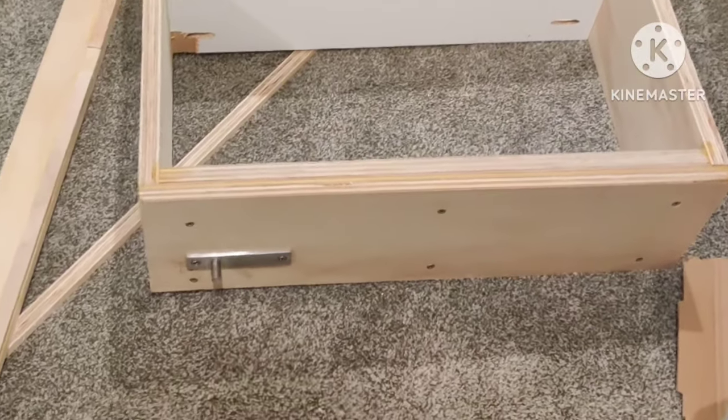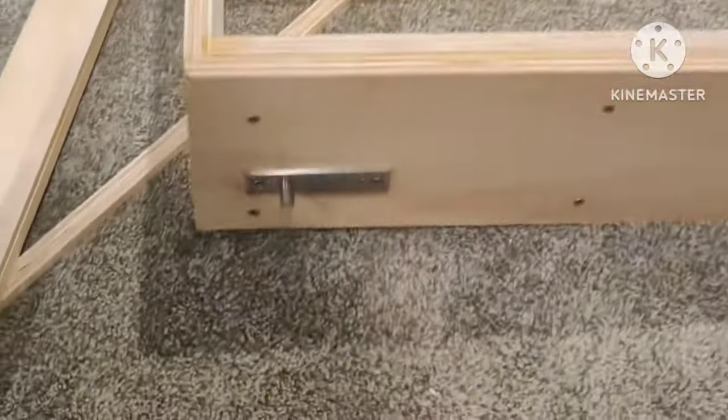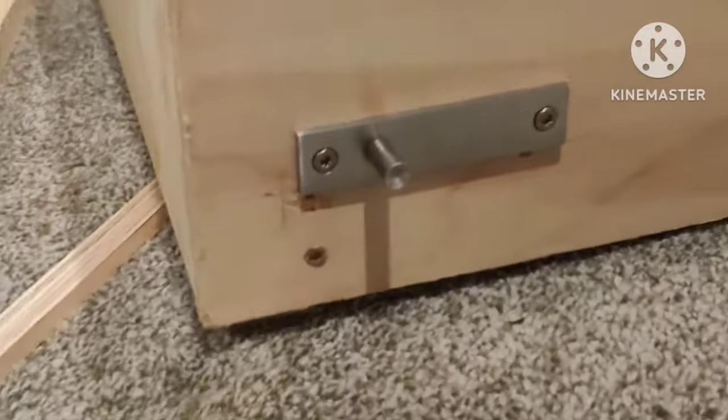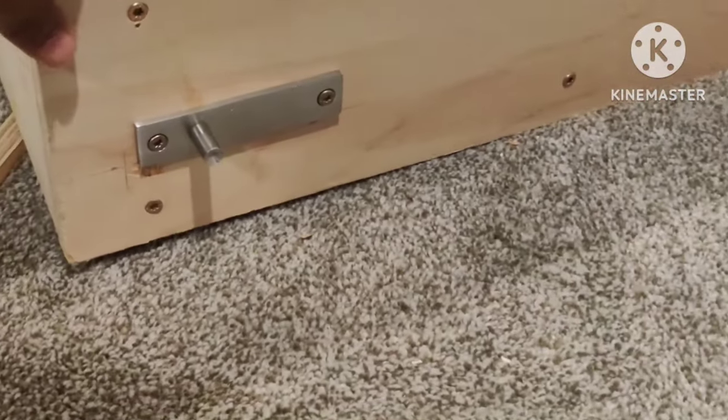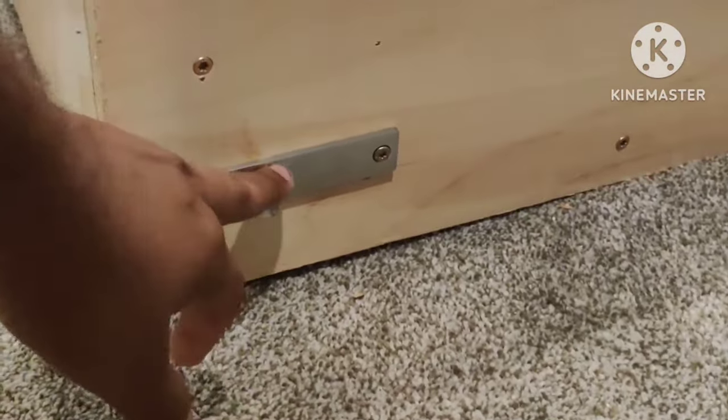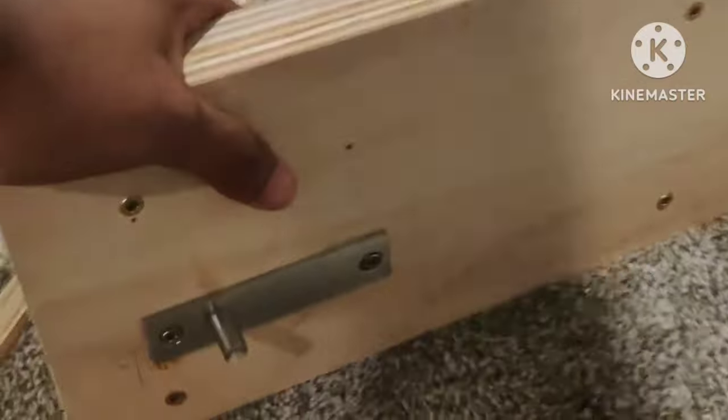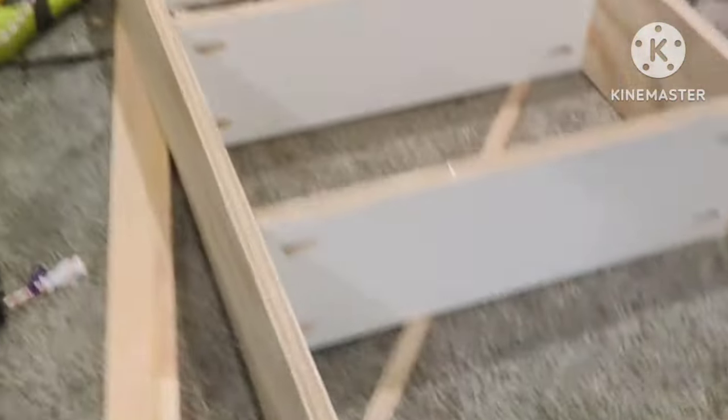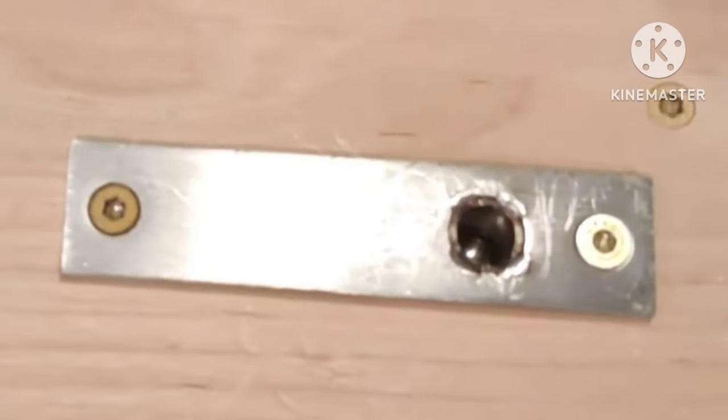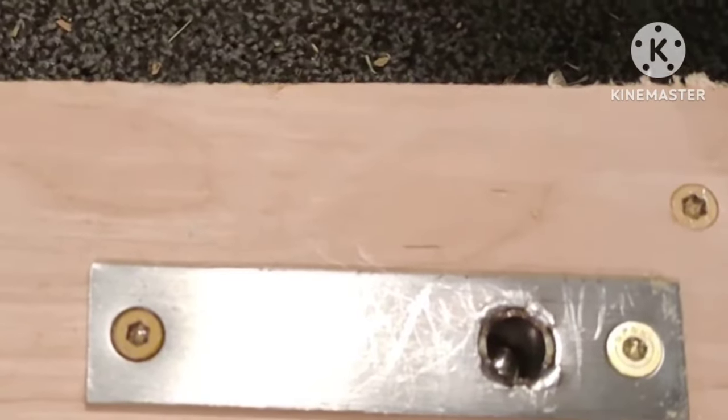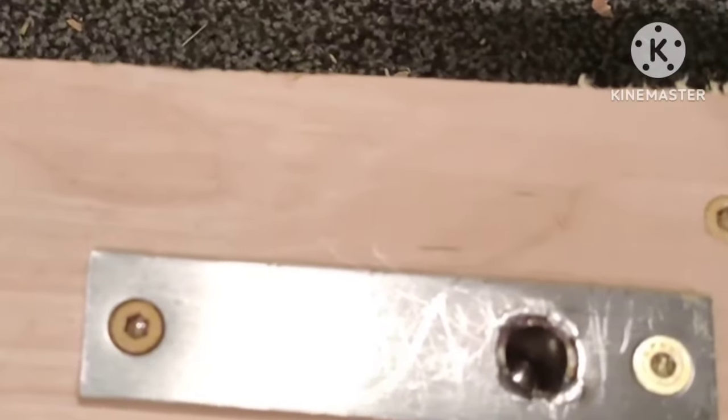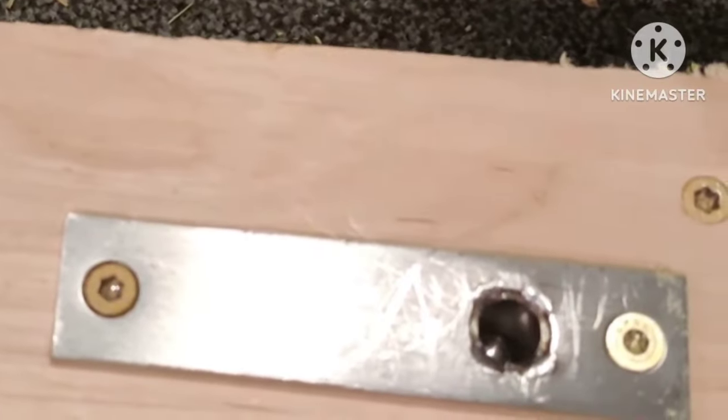I will explain how a pivot hinge works. At the bottom there's this part that attaches to the door. It has a protrusion here that goes into the bottom plate on the floor or your door frame. This is the bottom plate which has that part into which the protrusion goes in. This has a ball bearing inside. The ball bearing helps with the rotation.